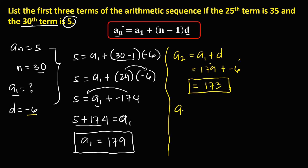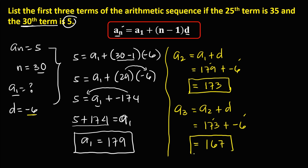For the third term, a sub 3, using a sub 2 plus the common difference: 173 plus negative 6, which is 173 minus 6, so a sub 3 equals 167. These are the first three terms of this arithmetic sequence: 179, 173, and 167.